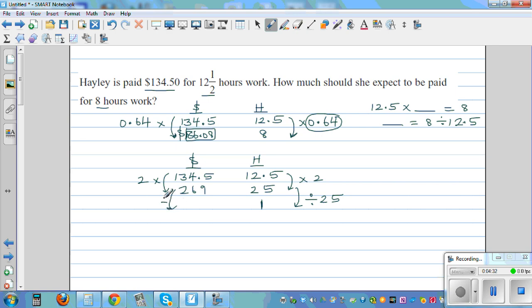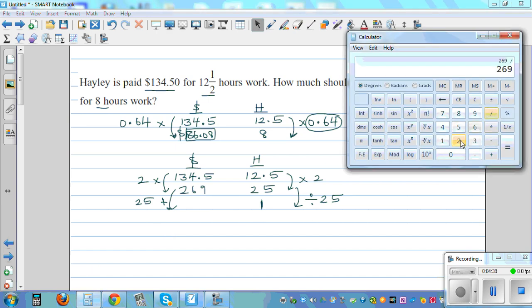I'm just explaining a different way. So $269 divided by 25—that's the hourly rate—which is $10.76.